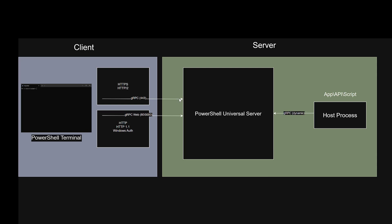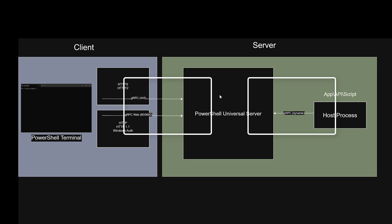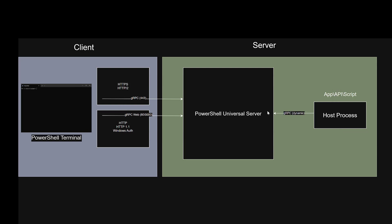One option is enabling either permissive or integrated communication for the PowerShell Universal module. In permissive mode, you can use both communication methods: you can go via the front end URL using all the same authentication and authorization policies, or you can optionally use the backend gRPC channel from host processes into the PowerShell Universal server, which bypasses a lot of authentication and authorization but is solely available for scripts running inside PowerShell Universal. Depending on your security stance, you may want to stick with strict mode or enable integrated or permissive mode.